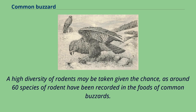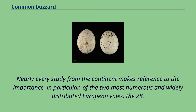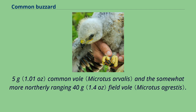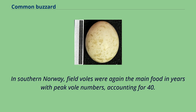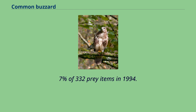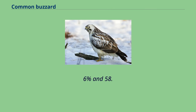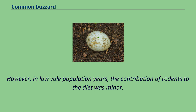It seems clear that voles are the most significant prey type for European buzzards. Nearly every study from the continent makes reference to the importance in particular of the two most numerous and widely distributed European voles — the 28.5-gram common vole and the somewhat more northerly ranging 40-gram field vole. In southern Scotland, field voles were the best represented species in pellets, accounting for 32.1% of 581 pellets. In southern Norway, field voles were again the main food in years with peak vole numbers, accounting for 40.8% of 179 prey items in 1985 and 24.7% of 332 prey items in 1994. As far west as the Netherlands, common voles were the most regular prey, amounting to 19.6% of 6,624 prey items in a very large study.